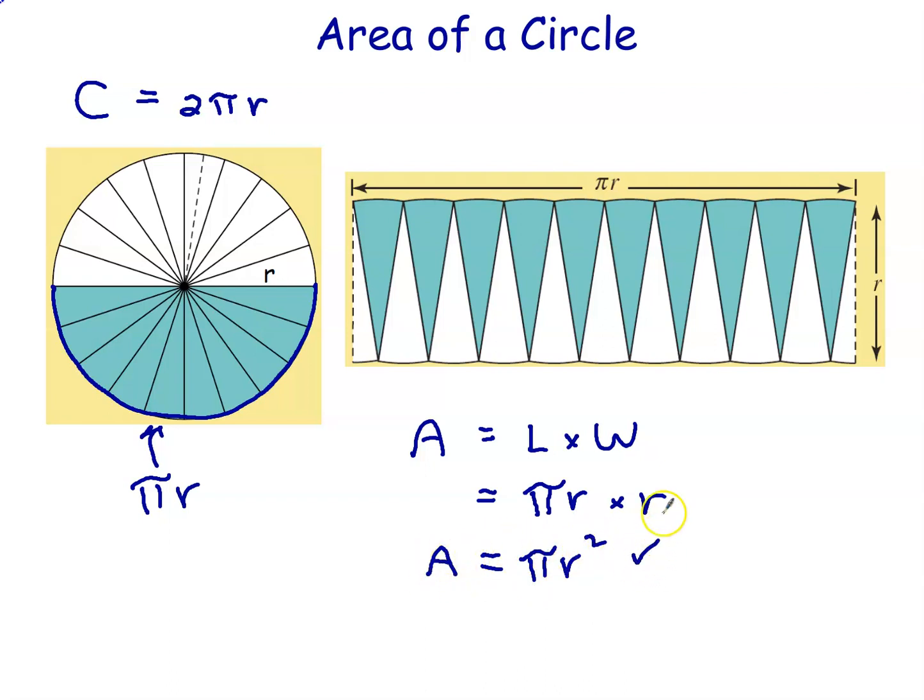And that is the formula for the area of a circle. Now, you might say to yourself, hold on a sec, Mr. Boggs, that there is not exactly a straight line. That's got little bumps in it. And I would say, well, okay.